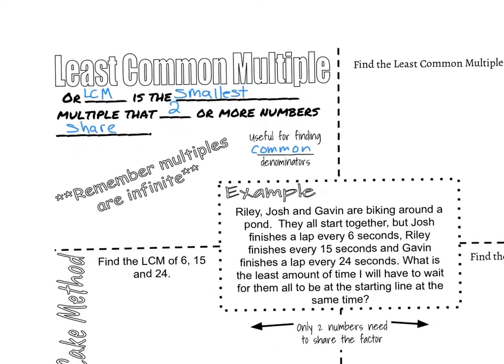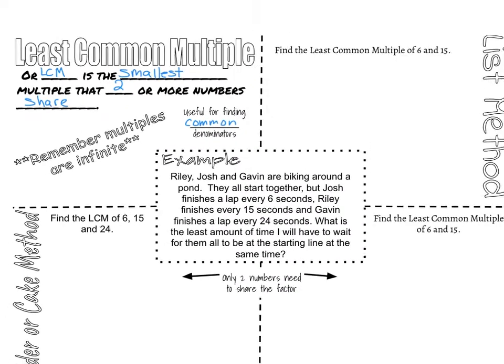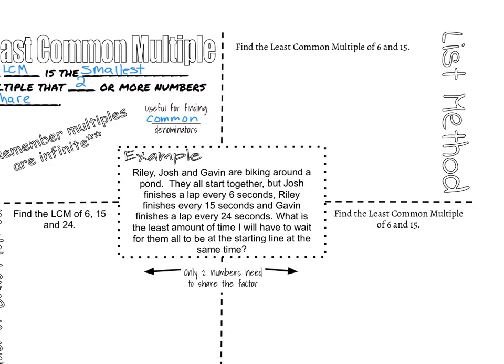Kind of like when we did greatest common factor, we are going to look at three different ways that we can find the least common multiple of two or more numbers. And the example we're going to center around is this: Riley, Josh, and Gavin are biking around a pond. They all start together, but Josh finishes a lap every 6 seconds, Riley finishes every 15 seconds, and Gavin finishes a lap every 24 seconds. What is the least amount of time I will have to wait for them all to be at the starting line at the same time?